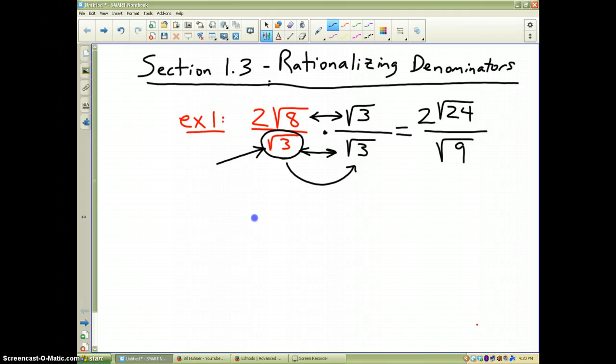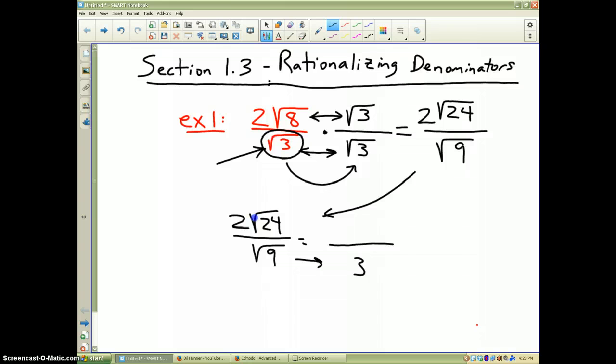Now we need to start simplifying. So I'm just going to draw an arrow and go down here. 2 square roots of 24 divided by the square root of 9. The square root of 9, we all know that is 3. And you have now gotten rid of the square root in the denominator. The top is still 2 times the square root of 24.